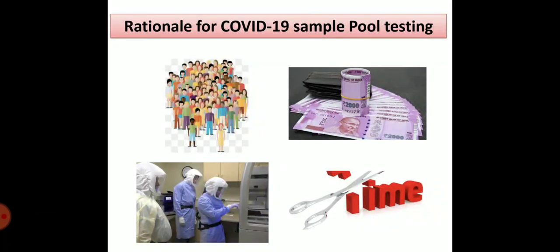Imagine 100 patients — you have to do 100 tests individually. But in case of sample pooling you have to do only 20, because five samples per pool makes 20 pools. By doing 20 you can get all 100 individual results. Look at the cost reduction: imagine one sample costs 1,000 rupees, so five samples cost 5,000 rupees. In case of pooling you reduce five into one, saving 4,000 rupees per five individuals.